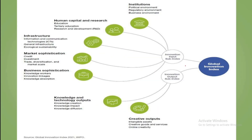The index actually has two subindices: the Innovation Input Subindex and the Innovation Output Subindex. Each indicator's score is calculated using a weighted average method. In the Innovation Input Subindex, factors such as institutions, human capital and research including education and tertiary education, digital and physical infrastructure, market ease, trade diversification, business sophistication, and knowledge workers are assessed.